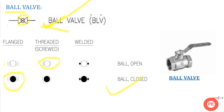For end connections on the ball valve: if two lines are shown across the valve symbol, it is a flanged type; if nothing is shown, it is a threaded type; and if two dots are shown beside the symbol, it is a welded connection. These connection indicators may differ slightly between designers or companies, but the basic valve symbol remains the same.